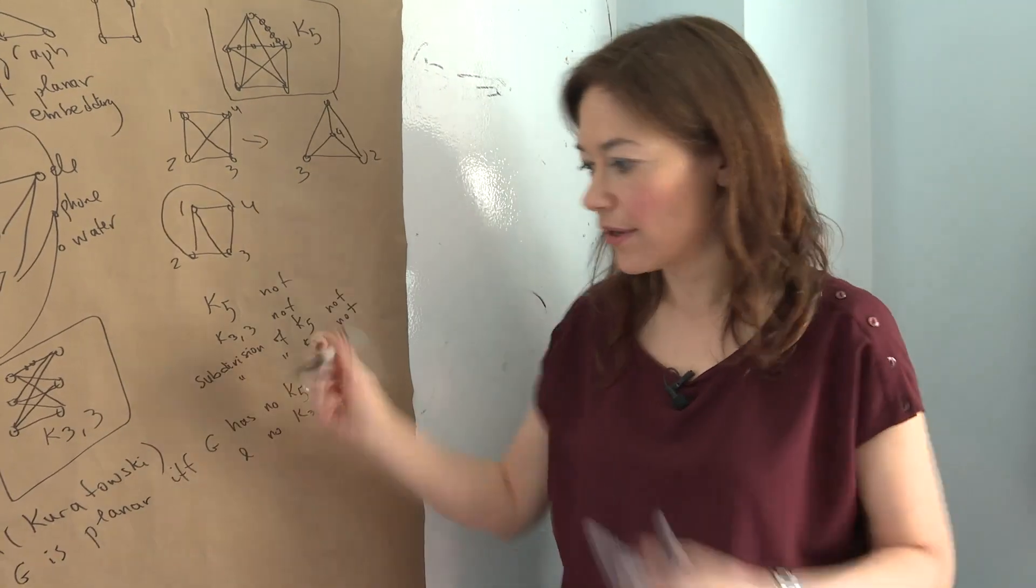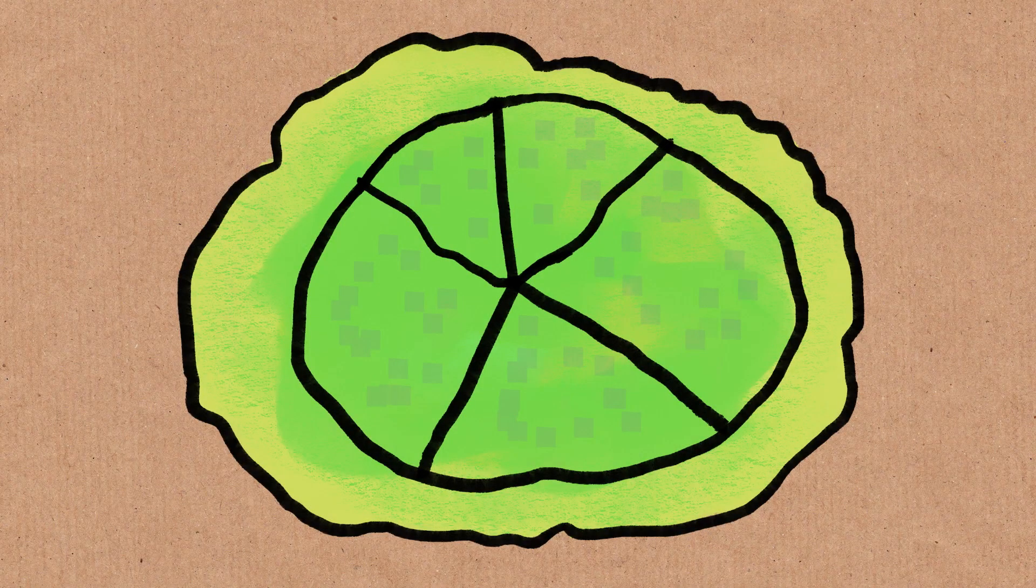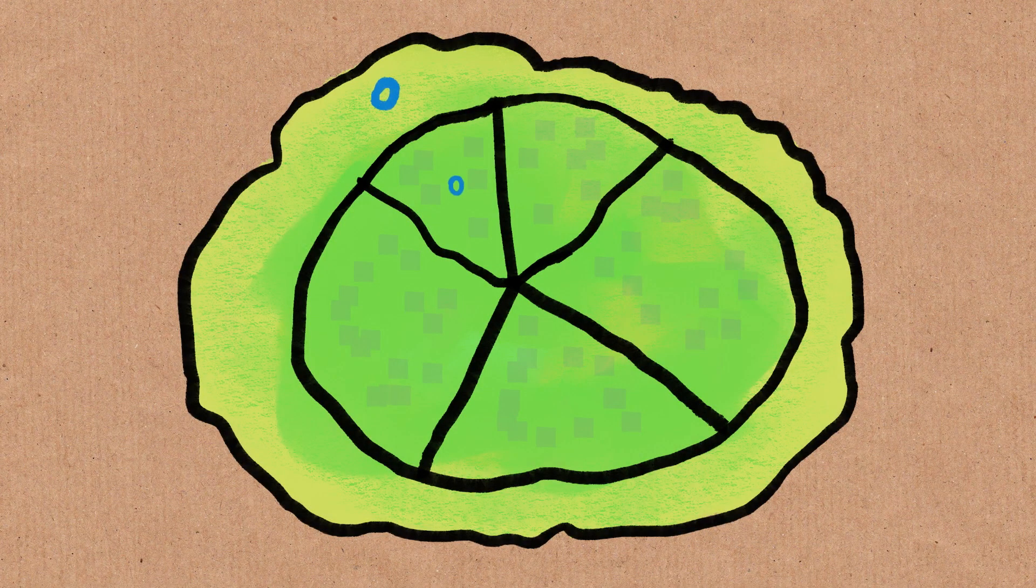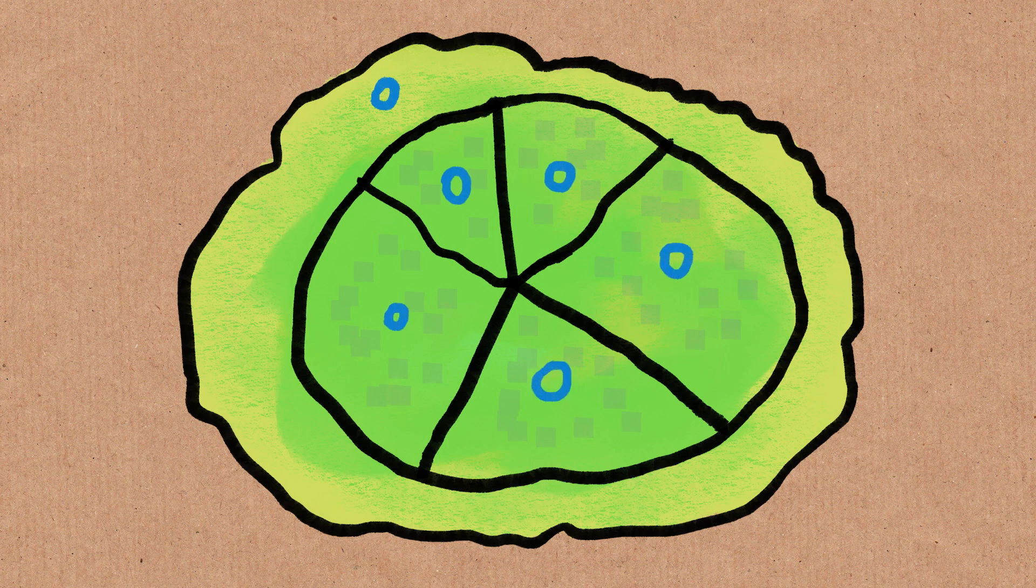Because you can easily translate coloring a map into coloring planar graph. What you do is you take a map. So the countries are this outside ring and then those triangles. So now I'm going to make a graph out of it. I'm going to put a vertex in the middle of each country. If two countries share the border, I'm going to put an edge between the two vertices.